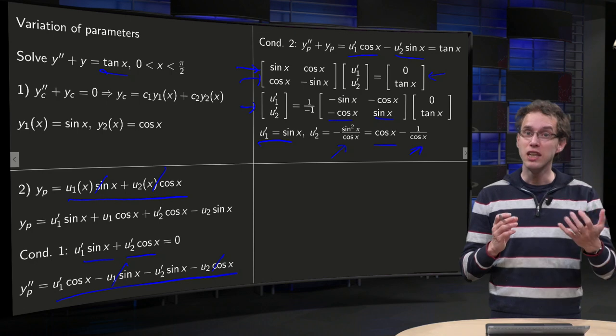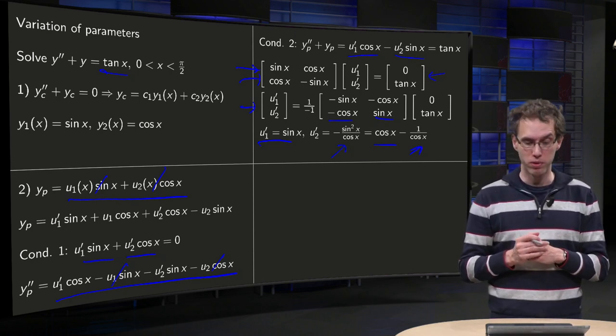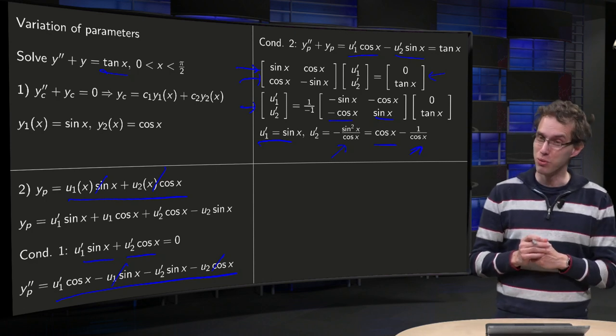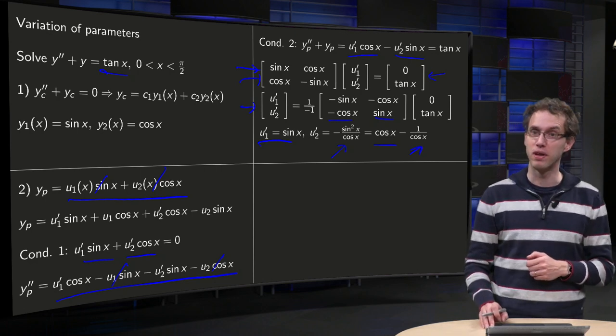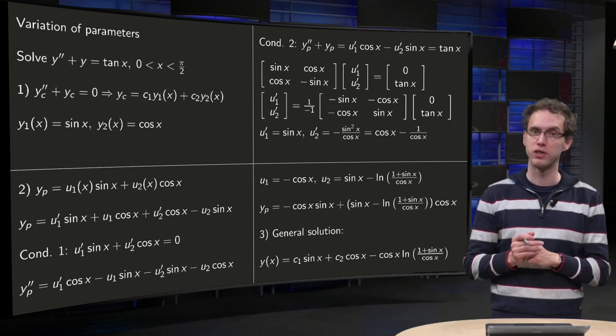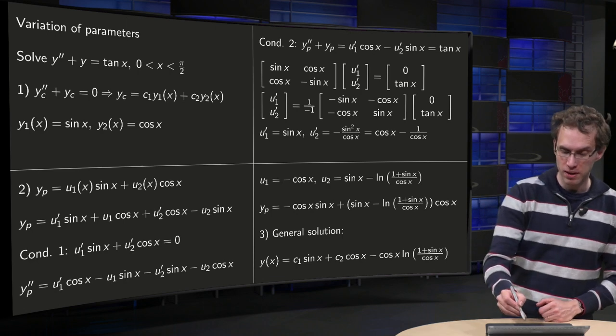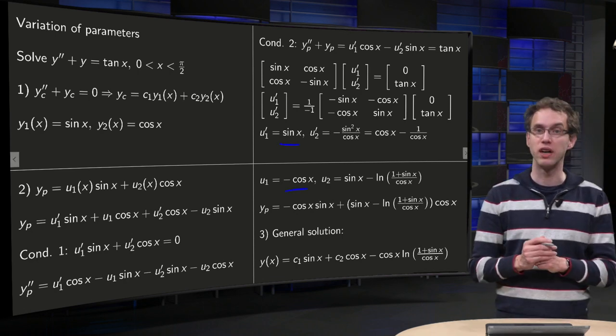So you see you can easily solve the differential equation for u₁', u₁' = sin(x). But the integral in the u₂' is slightly more complicated. Not the cos(x), but the 1/cos(x) is a problem of course. You can solve for u₁ directly. So you just integrate the sin and you get -cos(x).